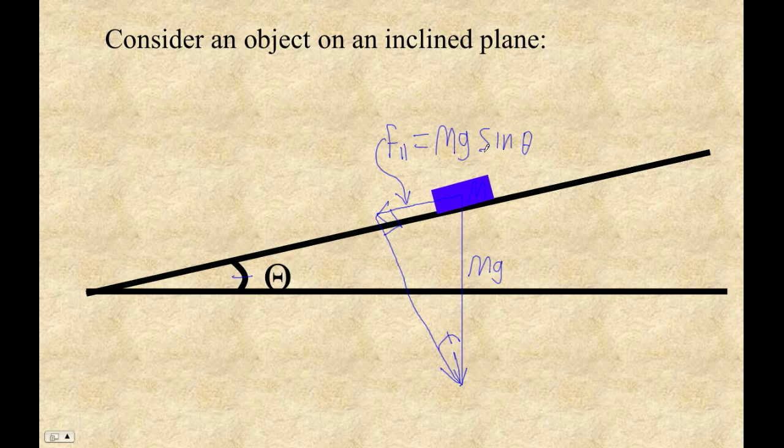This makes sense that it's sine because if the angle here was zero, that is, this floor was level, there would be no component parallel to it. The sine of zero is zero. That's why in our houses we have level floors - we don't want things to slide along our floor.